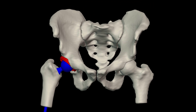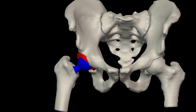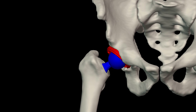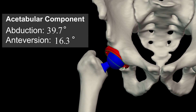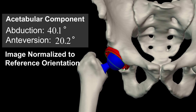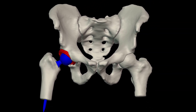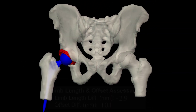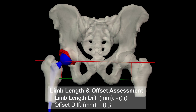Once the acetabular and femur components are implanted, surgeons can visualize component position for reference orientation by normalizing the intraoperative x-ray. Radling323 allows surgeons to increase accuracy by streamlining intraoperative imaging while reducing radiation exposure.